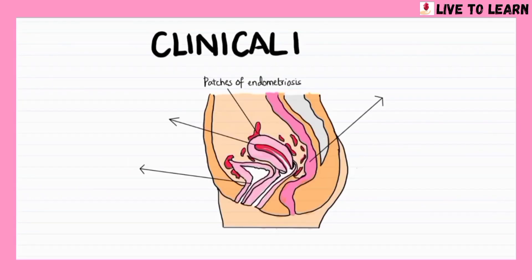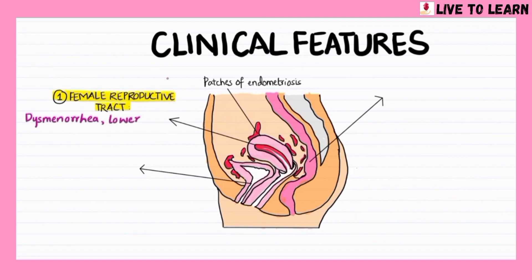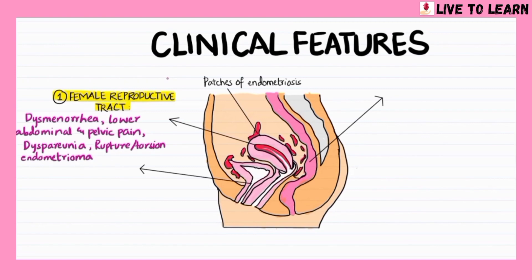Let's have a look at the clinical features of endometriosis in relation to the site of the lesion. Endometrial tissue at abnormal sites in the female reproductive tract, such as the ovary or fallopian tubes, leads to dysmenorrhea, which is painful menstruation, lower abdominal and pelvic pain, dyspareunia, which is pain during intercourse, rupture or torsion of an endometrioma, and infertility.